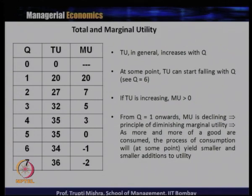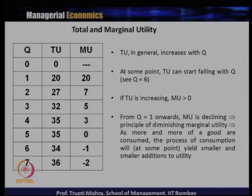Marginal utility goes on decreasing from the beginning. If total utility is increasing, marginal utility is always greater than 0. That is evident in the fifth unit because total utility is increasing and marginal utility is greater than 0. When total utility is maximum, beyond this the marginal utility is 0 and then negative.